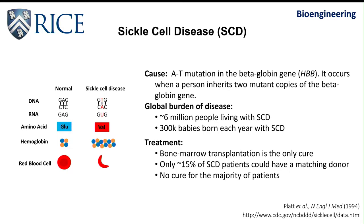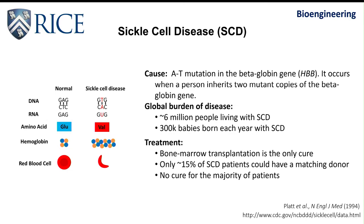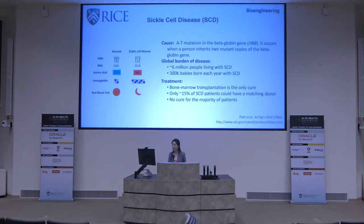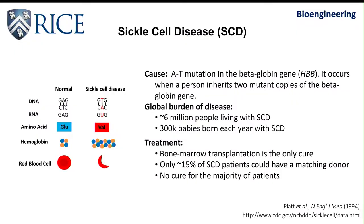Sickle cell disease is a good candidate for gene editing-based therapy because it's a monogenic disorder caused by an A-to-T single base mutation in the beta-globin gene, HBB. It occurs when a person inherits two mutant copies of the beta-globin gene from their parents. This A-to-T base change alters the amino acid from hydrophilic glutamic acid to hydrophobic valine. The resulting sickle hemoglobin proteins polymerize under hypoxic conditions, and the sickle-shaped red blood cells lead to capillary clogging, anemia, and organ failure. Globally, roughly 6 million people live with sickle cell disease, and 300,000 babies are born with it every year.